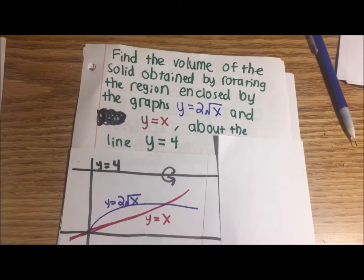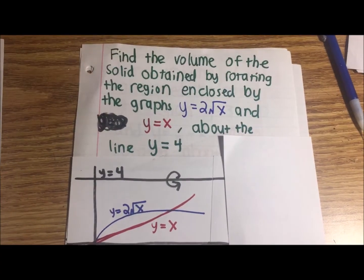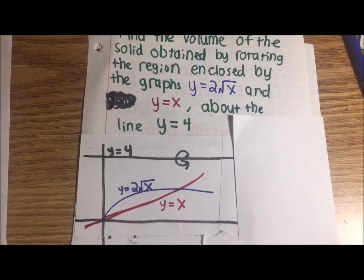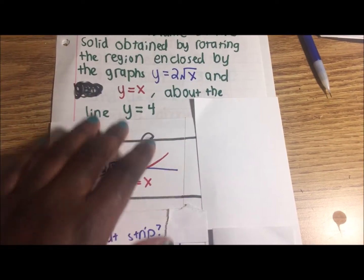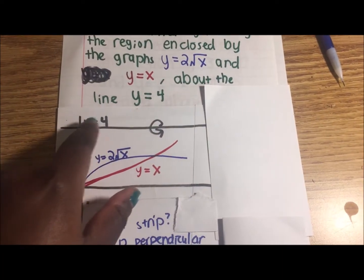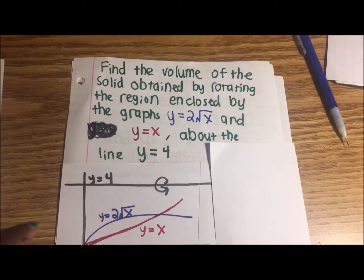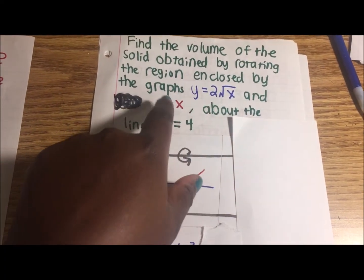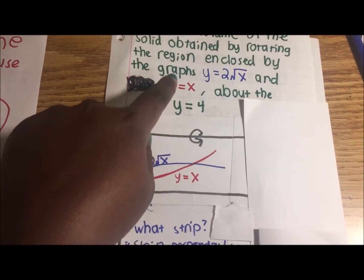Here's another example. Find the volume of the solid obtained by rotating the region enclosed by the graphs y equals 2 times the square root of x and y equals the square root of x about the line y equals 4.